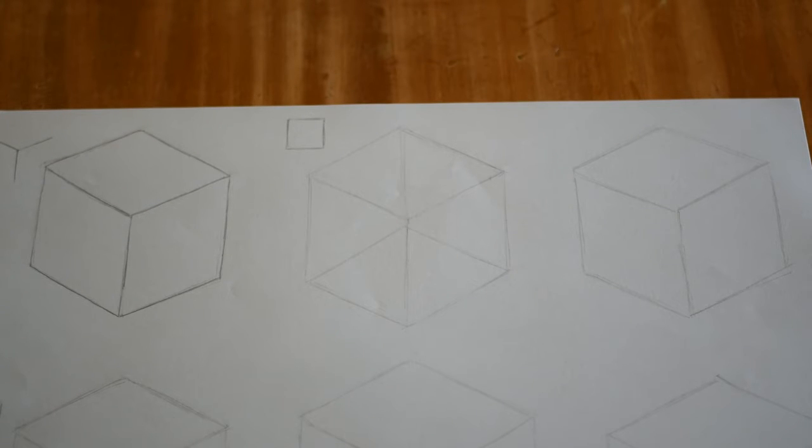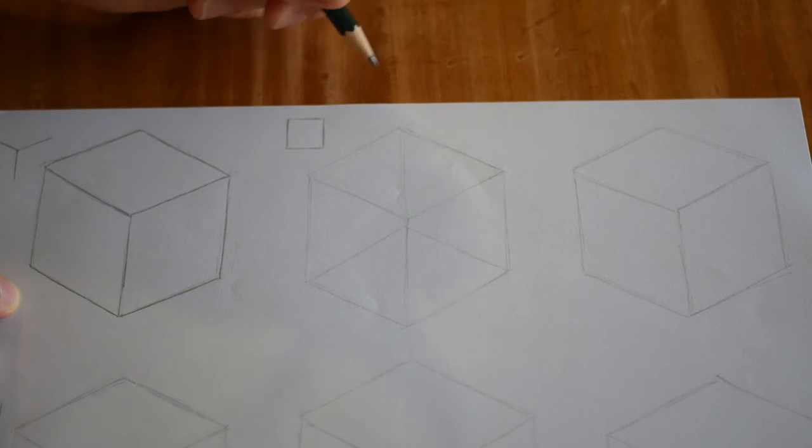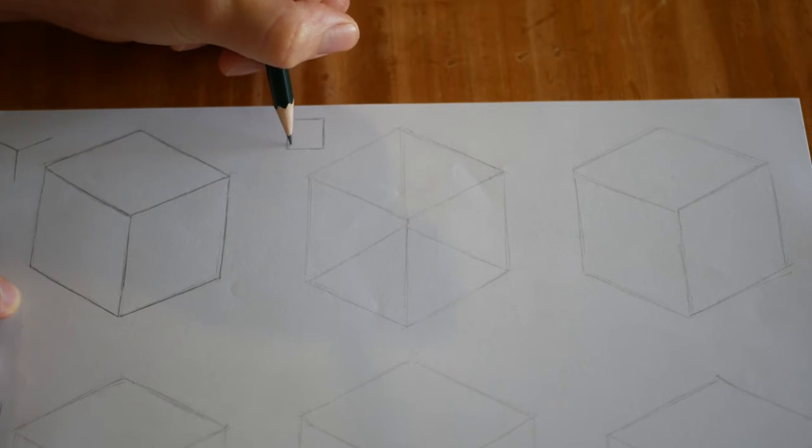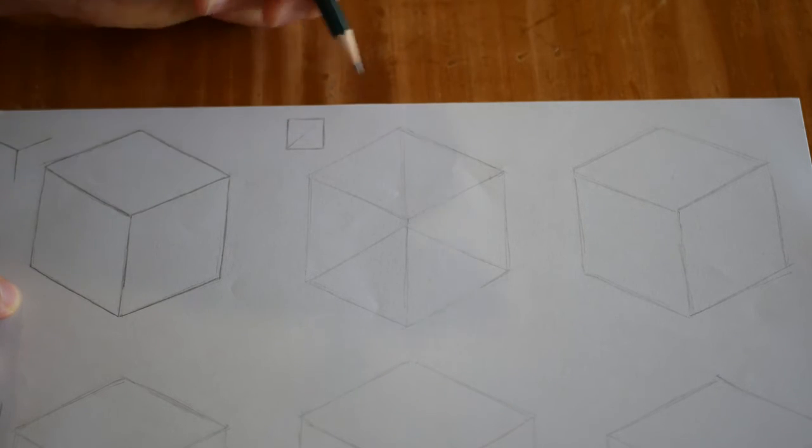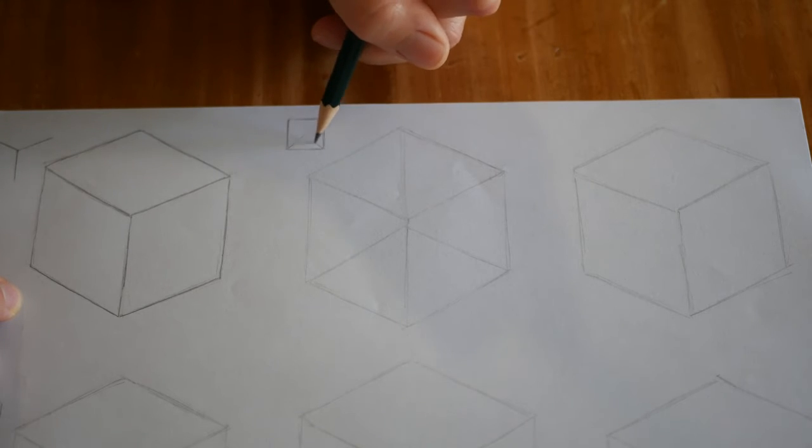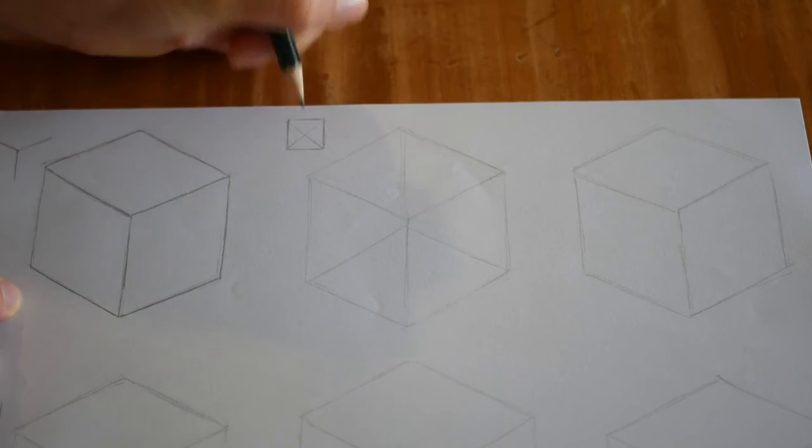Before we begin, let's think about our pyramid. We know that when we look at the top of the pyramid, all the lines come into the very center. The best way of finding the center of a square is drawing two straight lines diagonally, and that gives us the center.